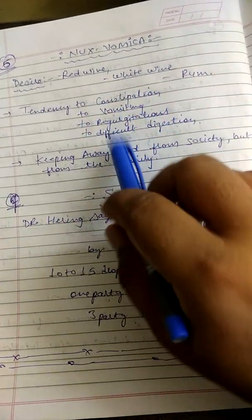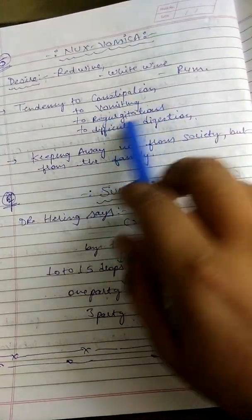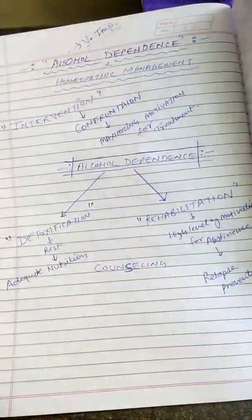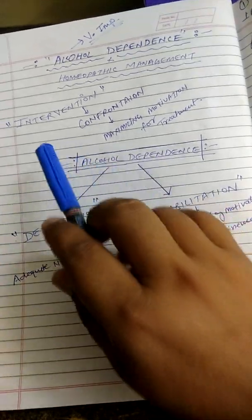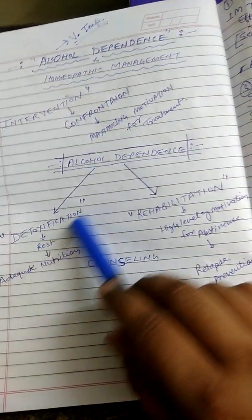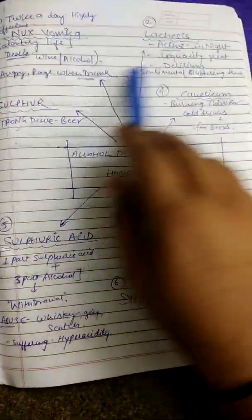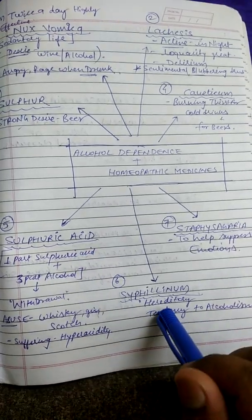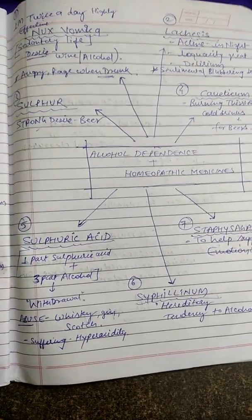Nux Vomica — sedentary life, tendency to constipation, vomiting, regurgitation, difficulty in digestion. In summary, Nux Vomica, Lachesis, Sulfur, Causticum, Sulfuric Acid, Syphilinum, and Staphysagria are kaafi effective medicines for alcohol dependence. Thank you.